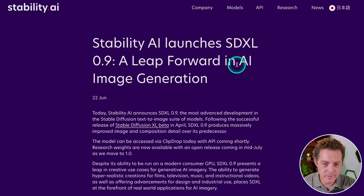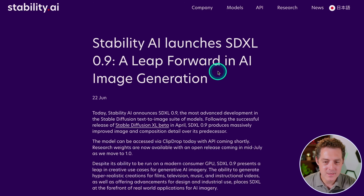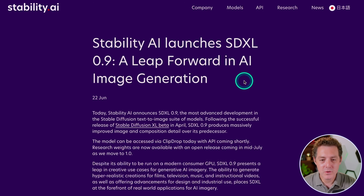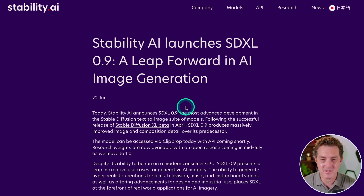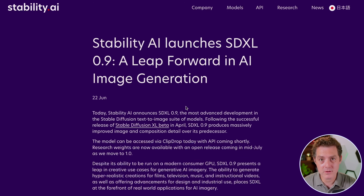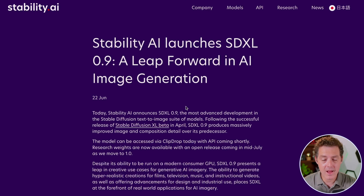This is the blog post. Stability AI announces SDXL — Stable Diffusion XL 0.9 — a huge leap forward in AI image generation. Stable Diffusion XL beta was released in April, and just a few months later, SDXL 0.9 produces massively improved image and composition detail over its predecessor. The rate of improvement of these open source models, whether large language models or AI generative art models, these are absolutely huge gains every single day, seemingly.